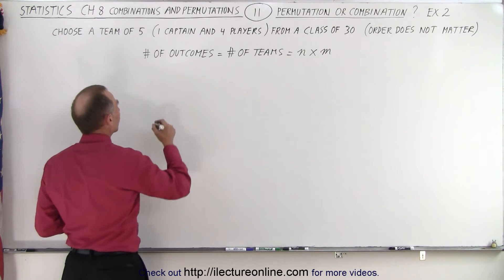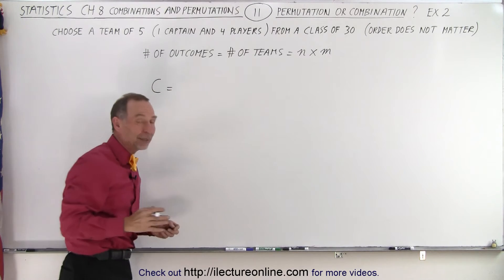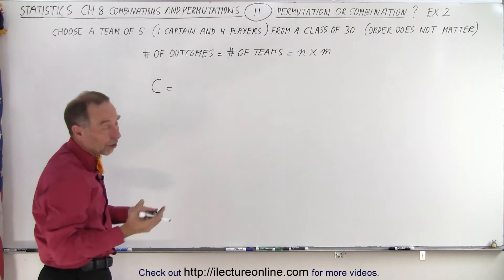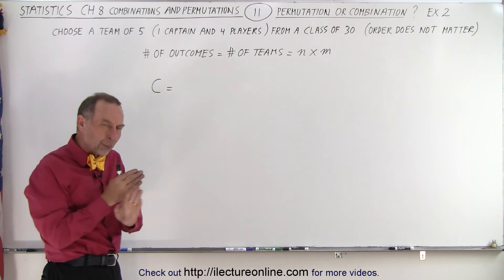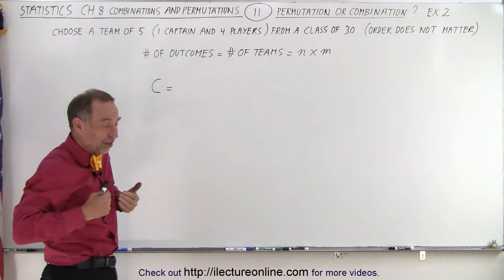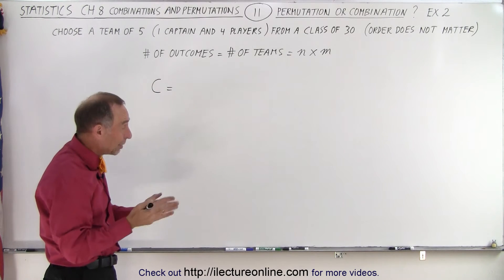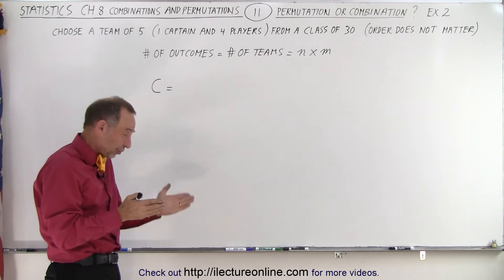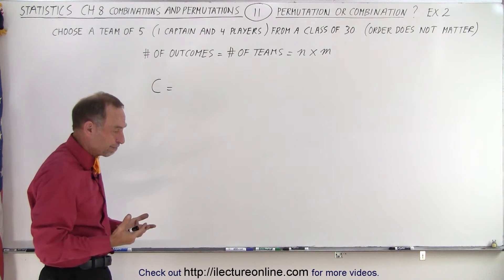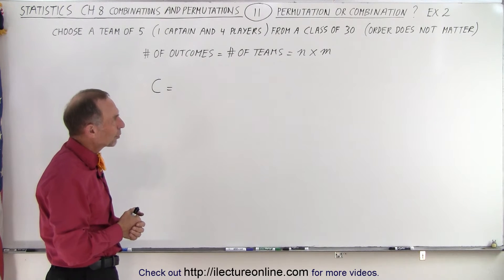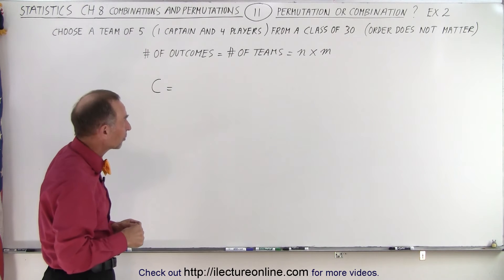If we're going to calculate the number of combinations—and why would it be combinations? Well, they kind of give it away: order doesn't matter. But even if order didn't matter, you really don't care what order you pick the players. You simply want to pick one captain and four players, and it doesn't really matter if you pick the players first and then the captain, or the captain first and then the players. You'll get the same result. So yes, we are going to be dealing with the number of combinations, not the number of permutations.